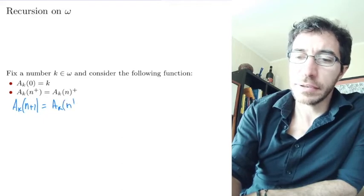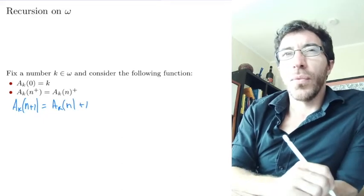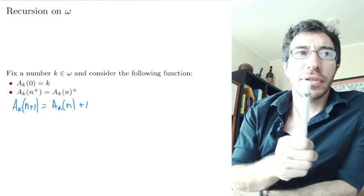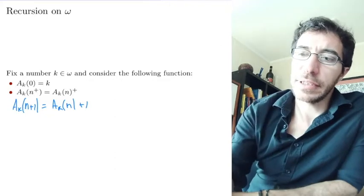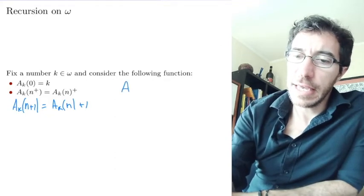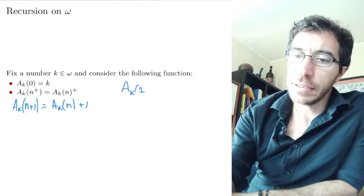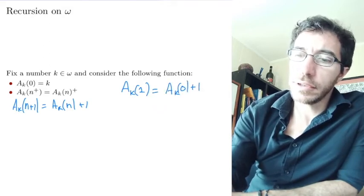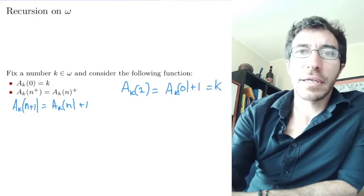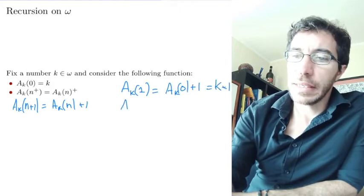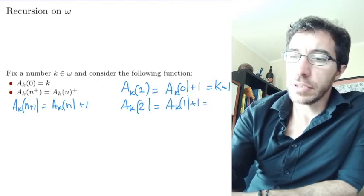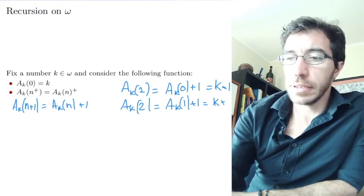So the previous value, what do you get? What is this function? Can you guys figure it out? Well, let's see. a_k at 1 is going to be a_k at 0 plus 1, so that's k plus 1. a_k at 2 is going to be a_k at 1 plus 1, which is k plus 1 plus 1, k plus 2.